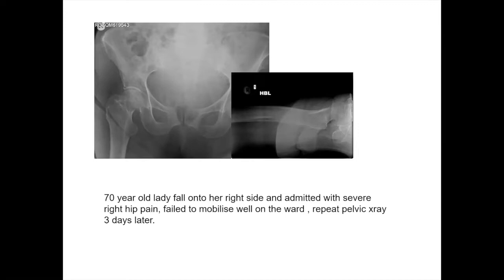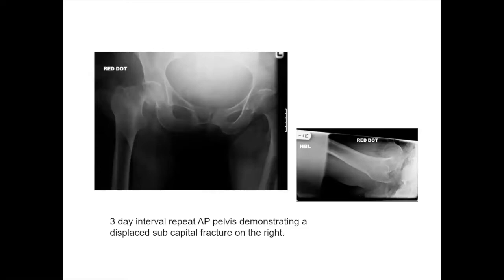The patient was admitted to the ward because she couldn't mobilise. Three days later the doctor told me she was still not mobilising, so we repeated the x-ray — and she had a fracture of the hip, now displaced as the physiotherapist tried to mobilise her. This can cause great pain and discomfort. Patients can get sent home, and it's embarrassing when they return elsewhere and have a hip fracture diagnosed. Often patients are not believed because they've had a normal x-ray.